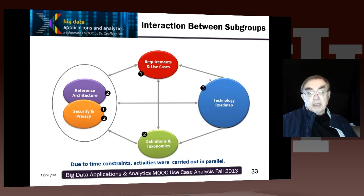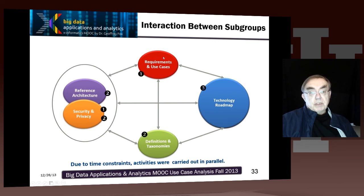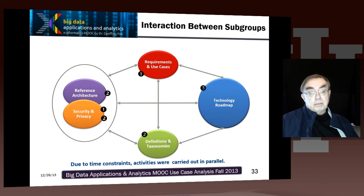Finally, we have here how the various subgroups fit together. Reference architecture and security are closely linked — we saw how security was linked to the components of the reference architecture. You want to start off with requirements and use cases, which drive the technology road map, and that has to interact with everything else. Definitions of technologies require all of these to be operational — especially the requirements, reference architecture, security, and privacy — because those produce the groundwork to know what you're meant to define and what ontologies and taxonomies to have. The reference road map wants to use all of these things to decide what to move forward.